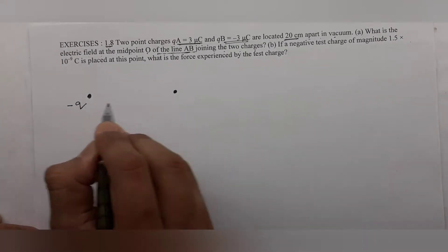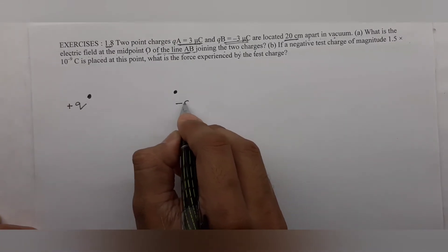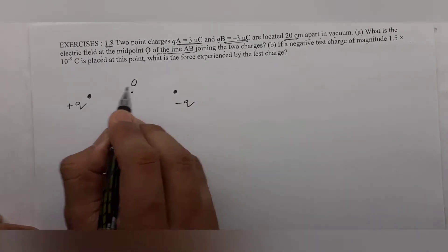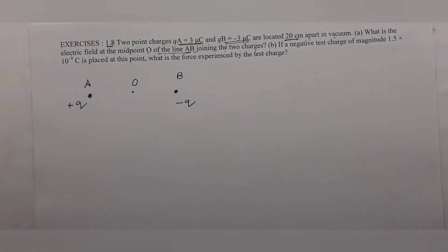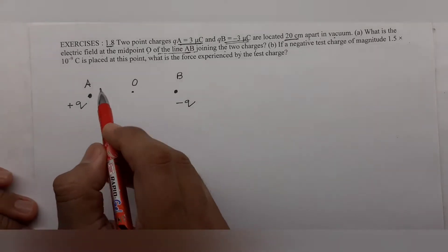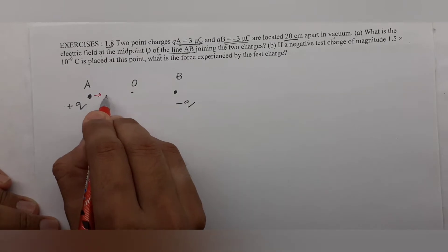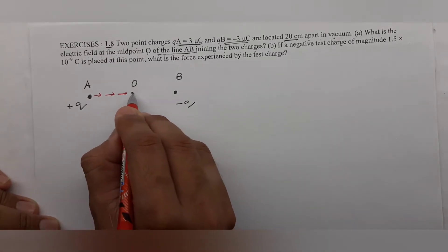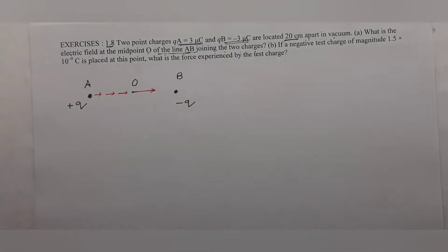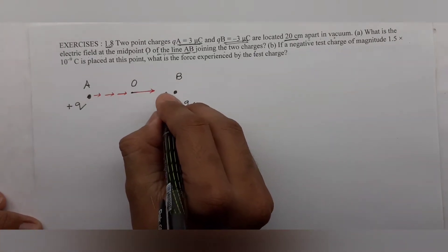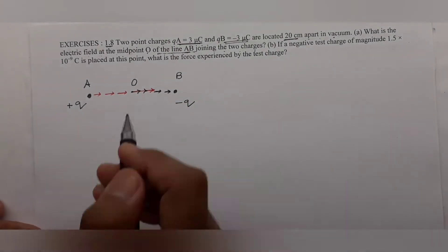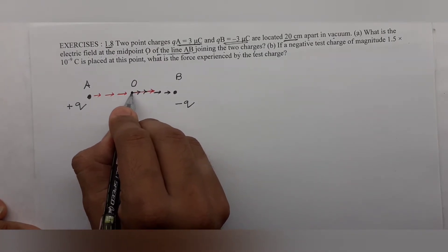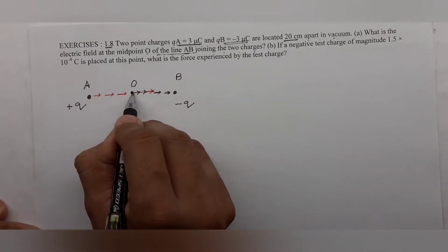Here we have plus q and minus q, with midpoint O between them — point A on one side, point B on the other. The electric field of a positive charge points outward, and the electric field of a negative charge points inward. So it is clear that at midpoint O, the field directions due to both charges are in the same direction.